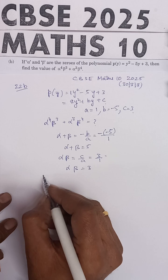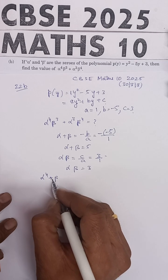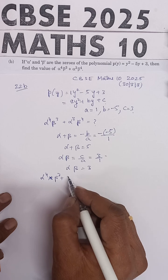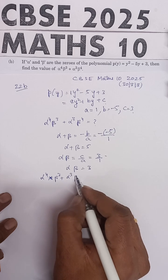Now we need to find the value of α⁴β³ + α³β⁴.